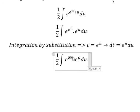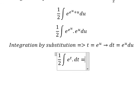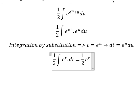We change e to the power of u to t, and e to the power of u du becomes dt. The integral of t equals one-half t, and now we get one-half e to the power of t plus C.